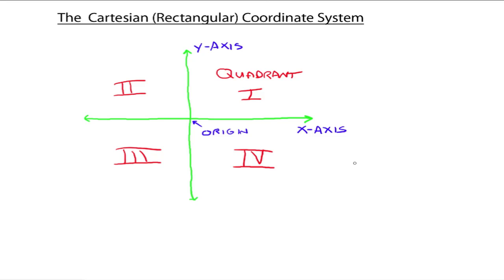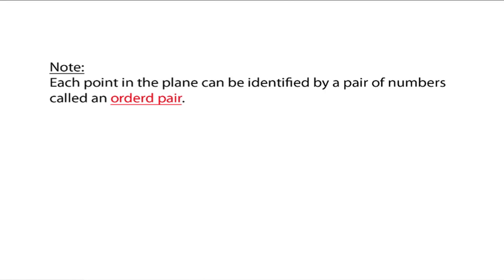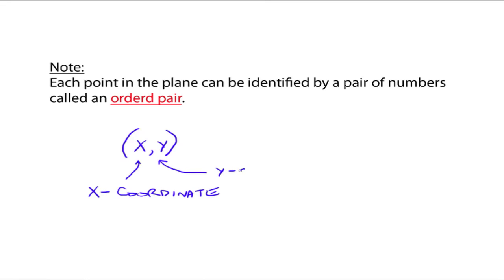In this coordinate plane, there are an infinite number of points — every spot in the coordinate plane is represented by a point. Each point can be identified by a pair of numbers called an ordered pair. The first part of the ordered pair is called the x-coordinate, and the second part is called the y-coordinate.